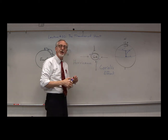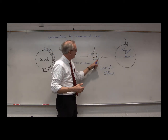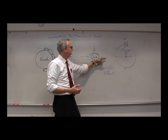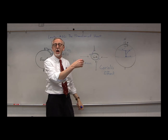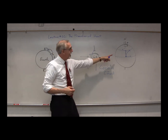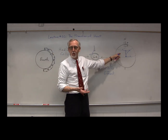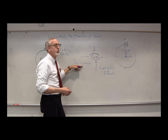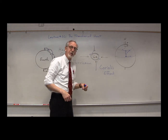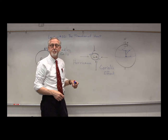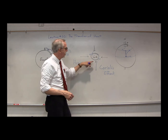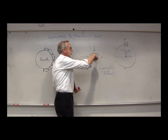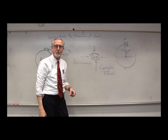The Coriolis effect occurs as air moves north or south on the rotating Earth, giving it either an easterly or westerly component of motion. In the southern hemisphere, exactly the reverse happens, and so hurricanes there travel in the clockwise direction.